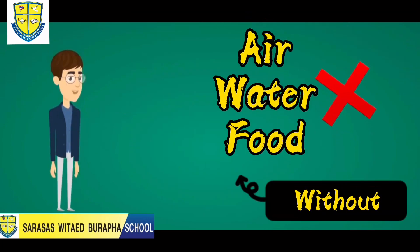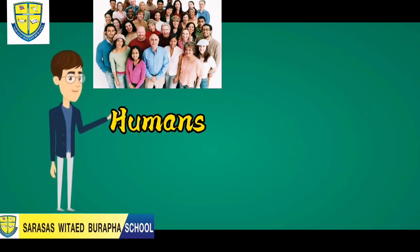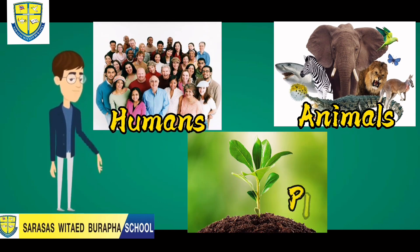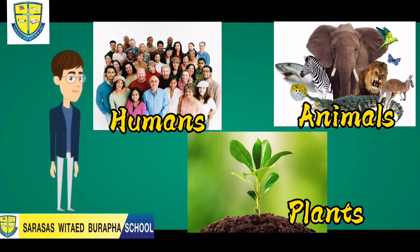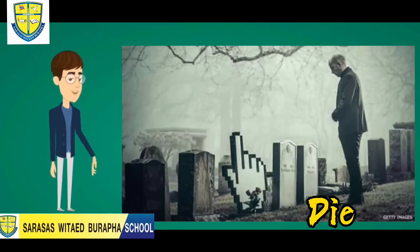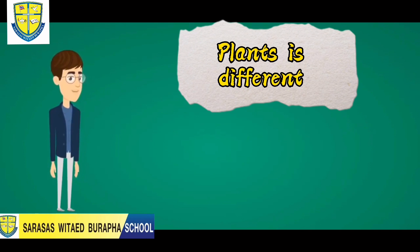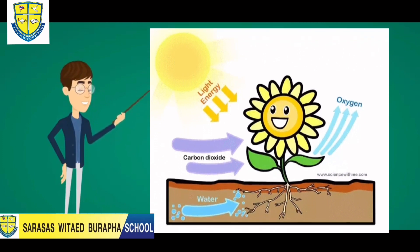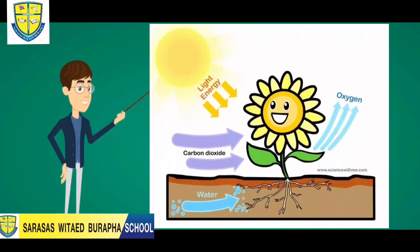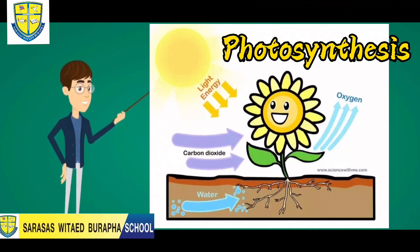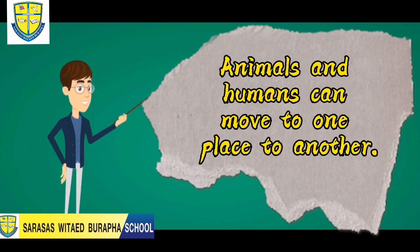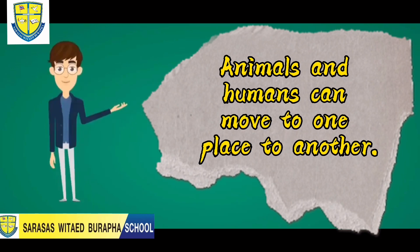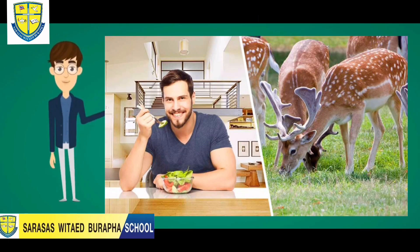Without these three things, humans, animals, and plants will all die. Plants are different from animals and humans because plants use air, water, and sunlight to make their own food, while animals and humans can move from one place to another to get their food and water.